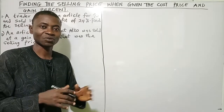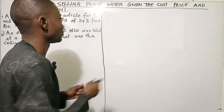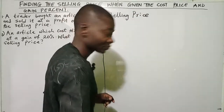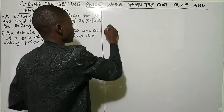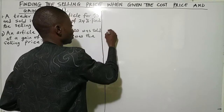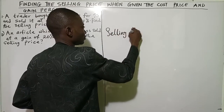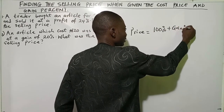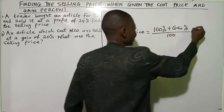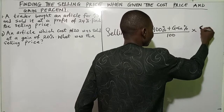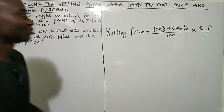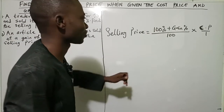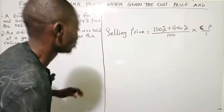But first and foremost we need to identify what formula we use when the cost price and the gain percent is given to us before calculating selling price. The formula is: Selling Price equals (100% plus Gain Percent) over 100, times Cost Price over 1. This is the formula that we use in calculating the selling price, and we're going to use this formula to answer the two questions on the board.